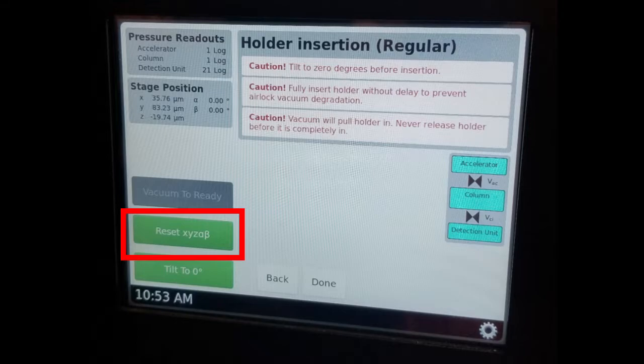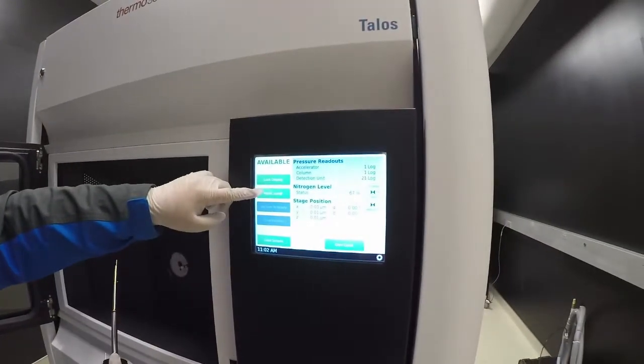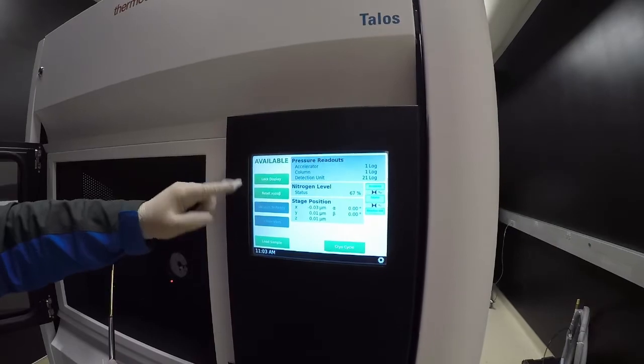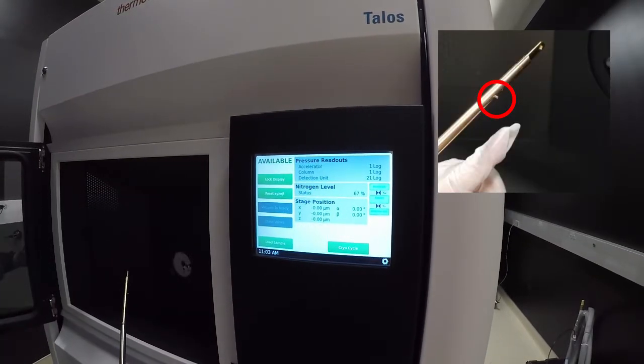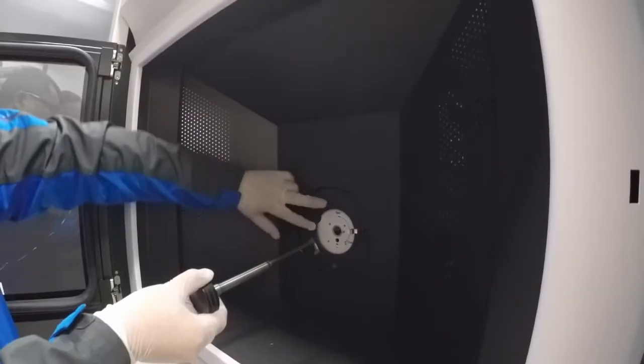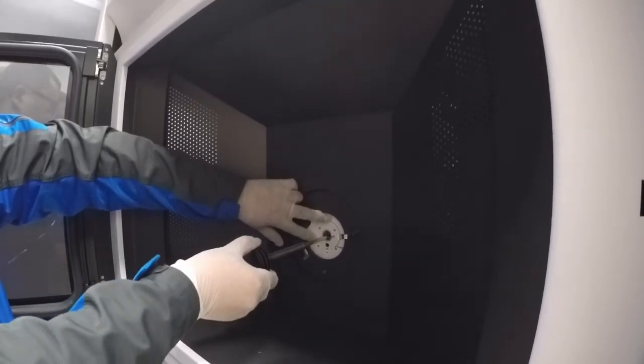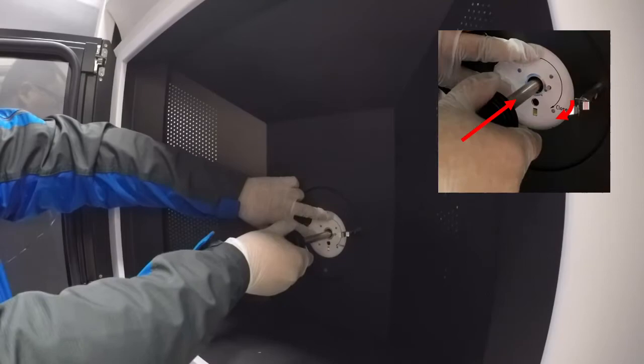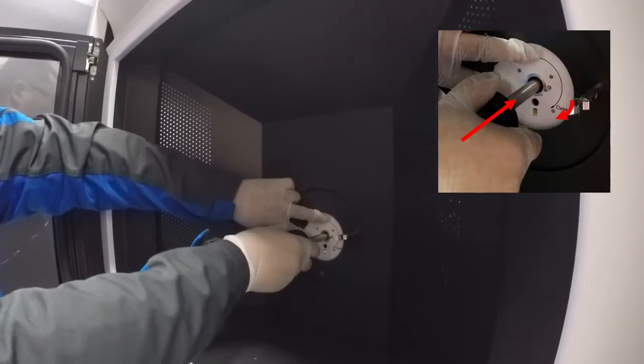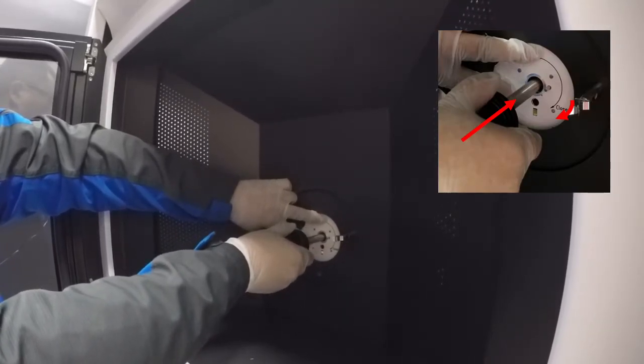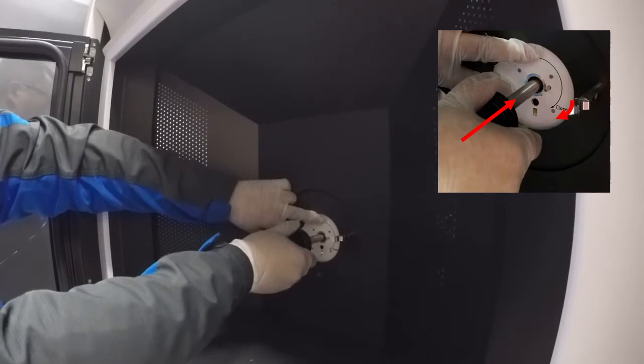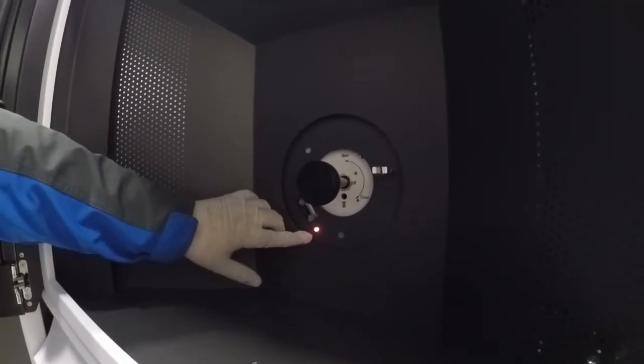You are now ready to insert the holder. There is a metal notch on the holder. Hold this notch at the 3 o'clock position and insert the holder most of the way. Finalize the position by turning clockwise to the 5 o'clock position. Once in this configuration, a light will indicate that the system is pumping.